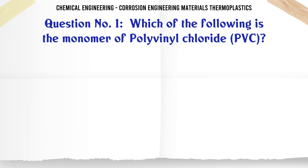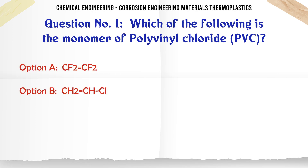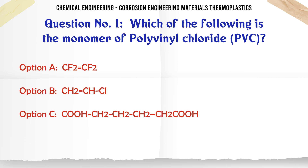Which of the following is the monomer of polyvinyl chloride PVC? A. CF2CF2, B. CH2CHCl, C. CH2CH2CH2CH2.